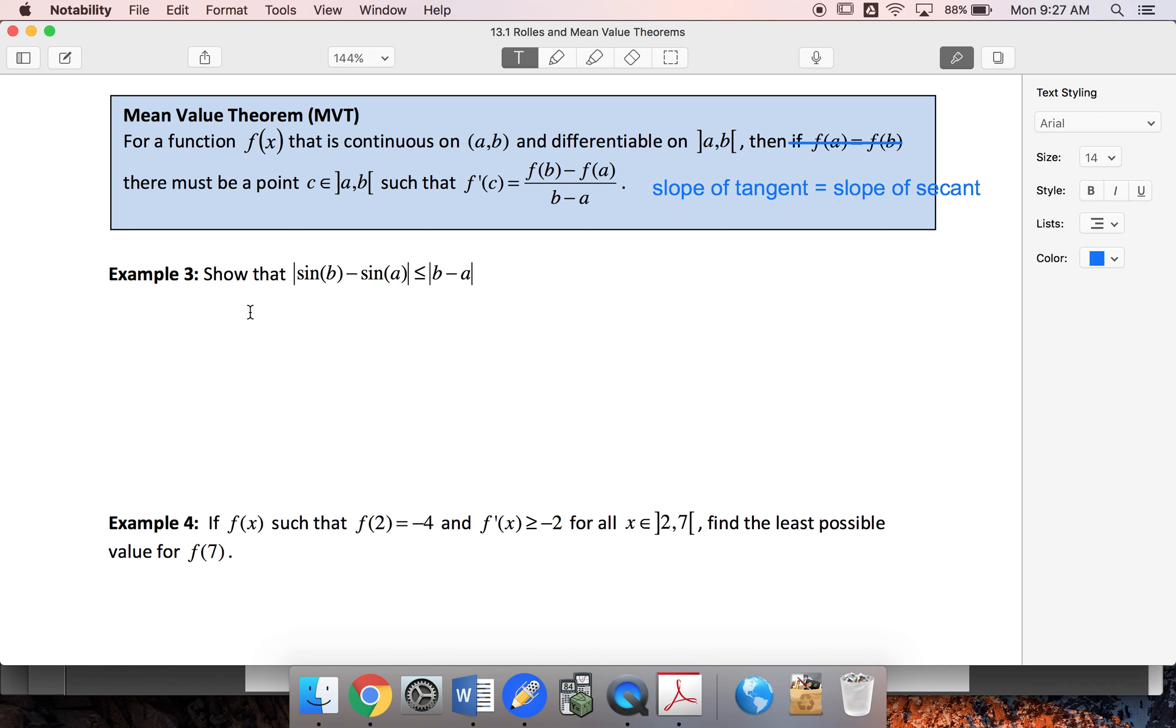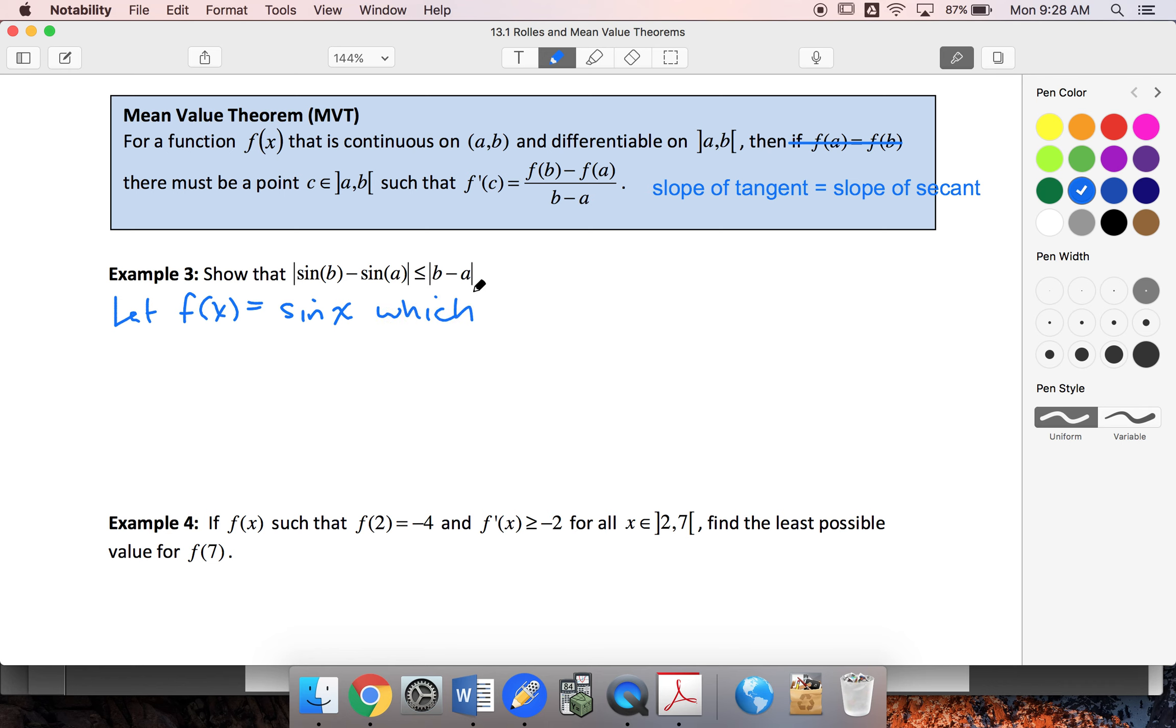Let's apply this to show that |sin(b) - sin(a)| ≤ |b - a|. This looks quite similar. We'll start by letting f(x) = sin(x). I know that sin(x) is continuous and differentiable for all x.